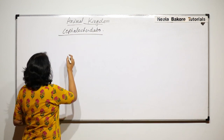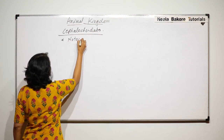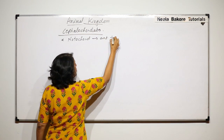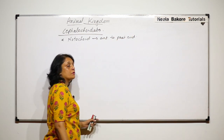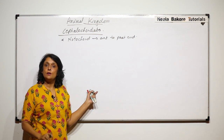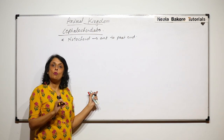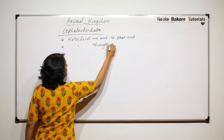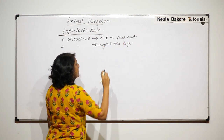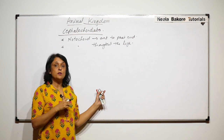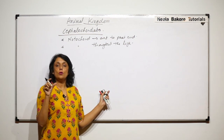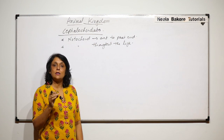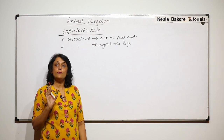In cephalochordates, the notochord is present from the anterior to posterior end — that means from the head region to the tail region — and it is found throughout the life. In case of Urochordata, the notochord was present only in the tail region, and as metamorphosis takes place the tail is lost, so the adults do not have a notochord.